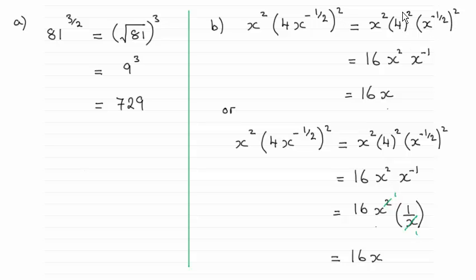So 4 squared is 16, then I've got the x squared, and this rule here is just simply multiply the 2 with the power. 2 times minus 1 half is minus 1. And then add the powers here when you're multiplying, and that gives us x to the power 1, or just simply x. So you get 16x.